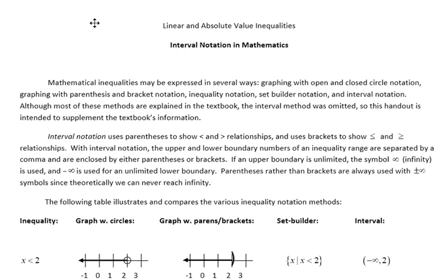With interval notation, the upper and lower boundaries of an inequality range are separated by a comma and are enclosed either by parentheses or brackets. If an upper boundary is unlimited, the symbol infinity is used, and negative infinity is used for an unlimited lower boundary. Parentheses rather than brackets are used to show plus or minus infinity symbols since theoretically we can never reach infinity.